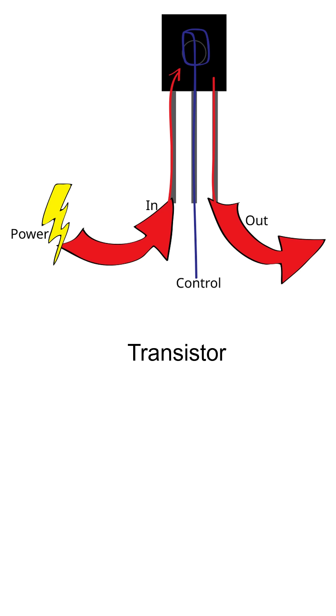A transistor is a three-terminal semiconductor device used to amplify or switch electronic signals and electrical power, and it is a fundamental building block of all modern electronic circuits.